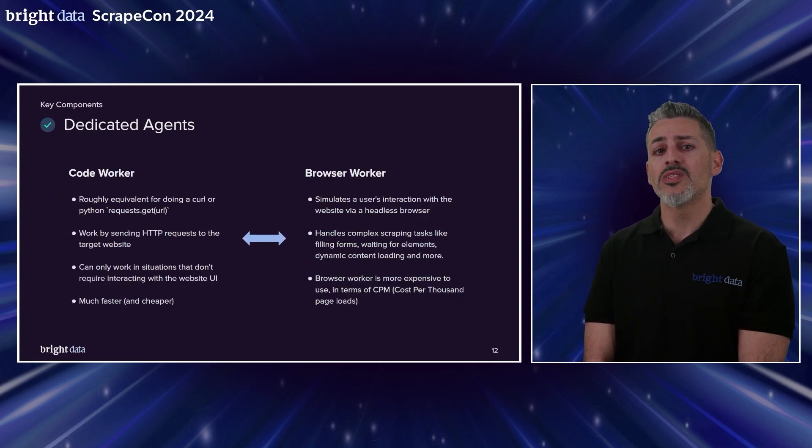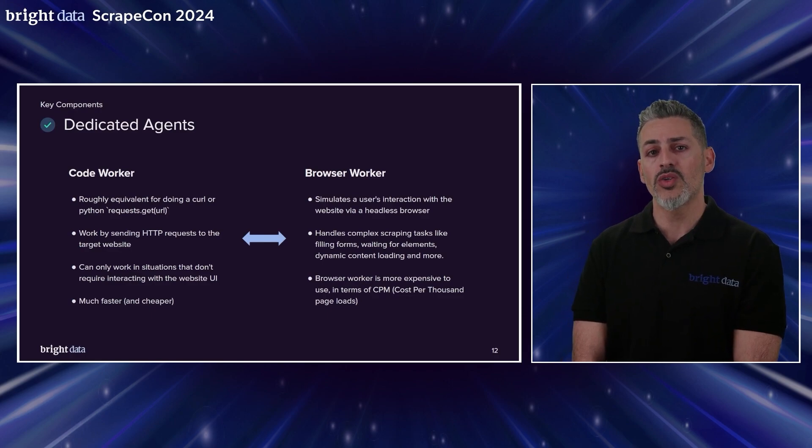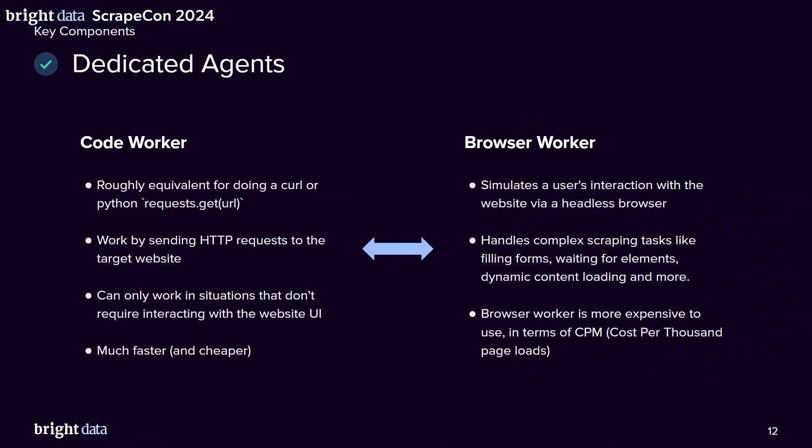The idea allows you to define two different operation modes: code-only mode or browser mode. Code will usually be quicker, but if your scraping requires interaction with a website — like clicking a button, filling a form, or typing into a search input box — then full browser capabilities is also an option, just like your Puppeteer code would interact with your local Chrome. We offer hundreds of browsers available for the task.